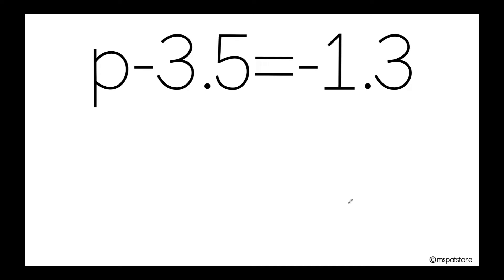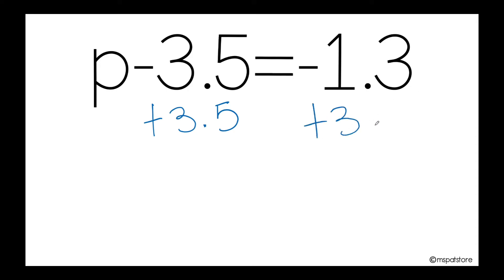Now I would like you to pause the video and try to do this example by yourself. You do remember that you need to isolate your variable. In order to cancel this intruder on the side where my variable is, you do the inverse operation — not changing the signs. The inverse operation of subtraction is addition. So I will add 3 and 5 tenths here, and I will also add 3 and 5 tenths on the other side. Now I'm ready to cancel this out, and I will have P alone — that was my goal.